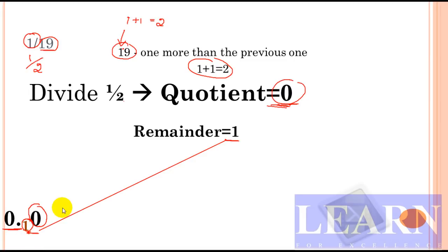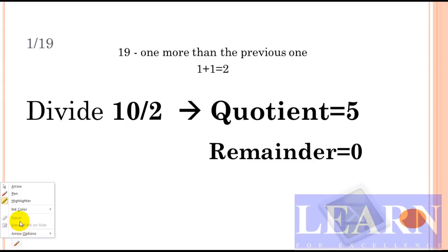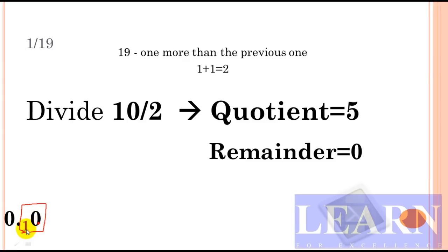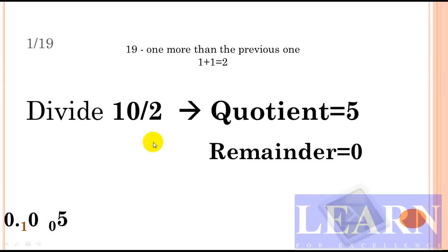After getting the first digit, the next number to divide is not 1 by 2 but 10 by 2, because the remainder 1 and quotient 0 together form the number 10. Dividing 10 by 2 gives quotient 5 and remainder 0. So we write 5 as the larger number and 0 as the smaller remainder.